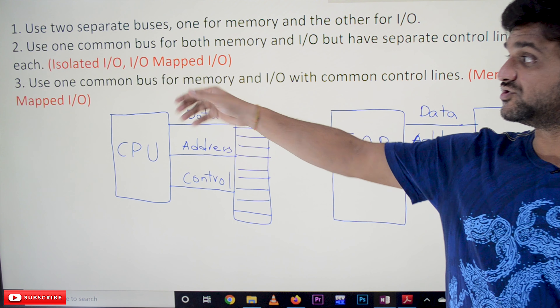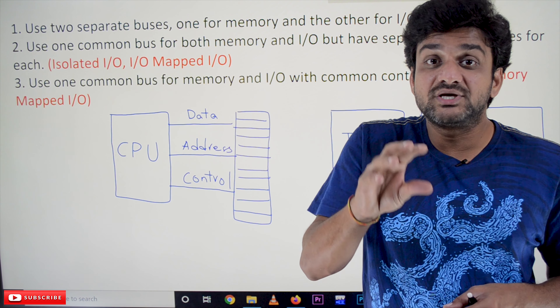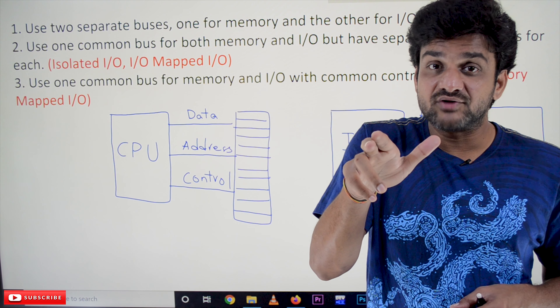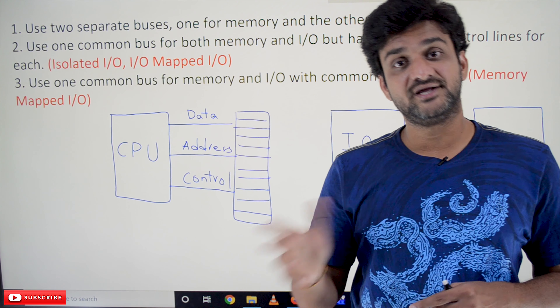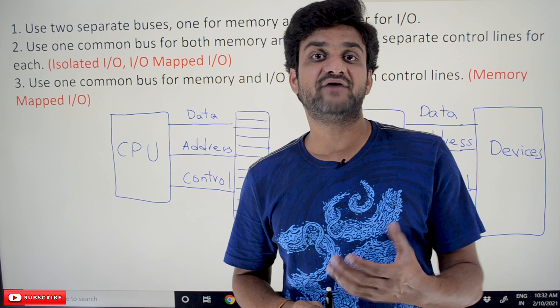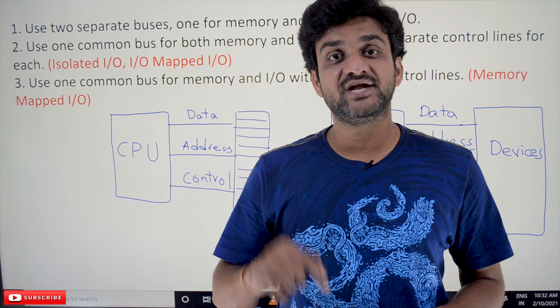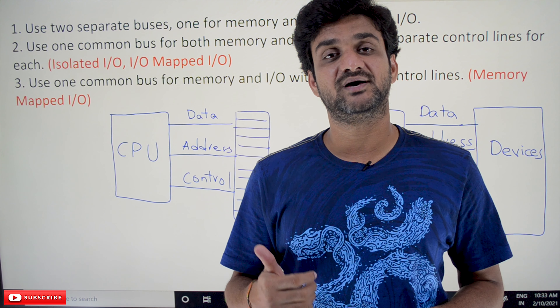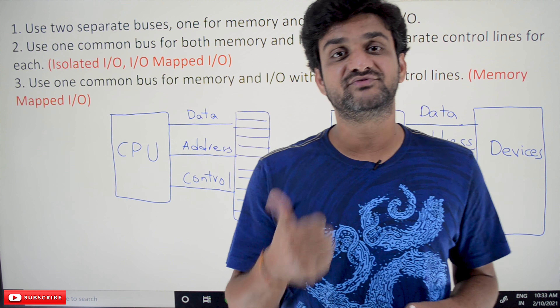In our next coming videos we will try to understand isolated IO, IO-mapped IO, and also memory-mapped IO. So this is about how the bus configuration and bus organization can be done with IO devices and the memory device. Hope you got clarity on this concept. Thanks for watching. If you haven't subscribed to our channel, please subscribe and press the bell icon for the latest updates. If you feel this content is helpful, please give us a like and share this video with your friends so that they will also get benefited.